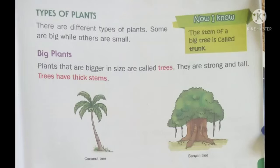Types of plants: there are different types of plants — some are big while some are small. Jo pode hote hain un ke mukhtalif aqsam hote hain. Ek jaise sare plants nahi hote — kuch plants bade hote hain aur kuch chhote hote hain.